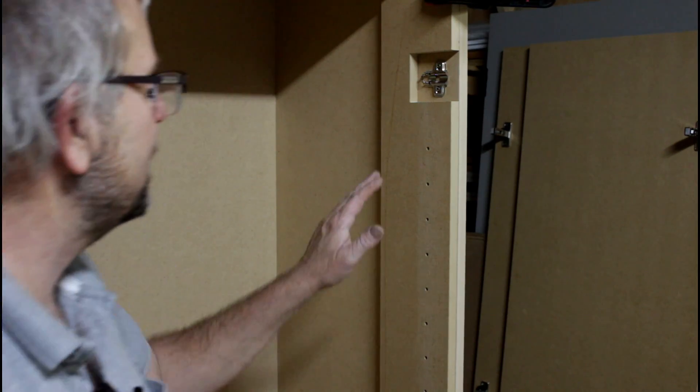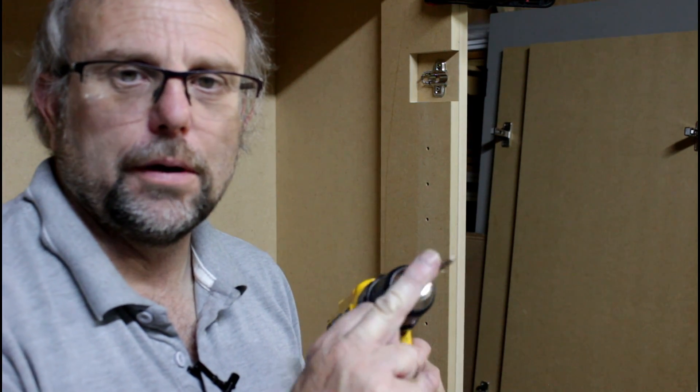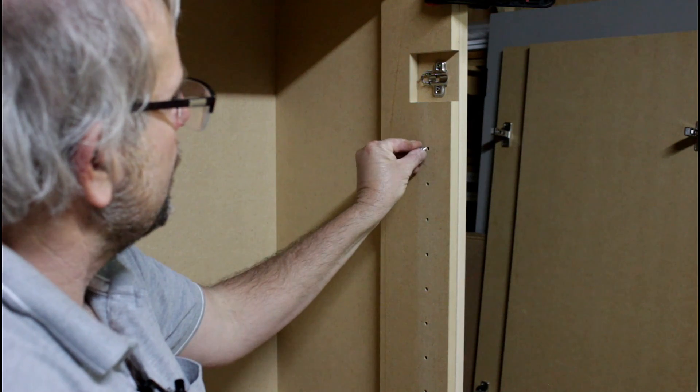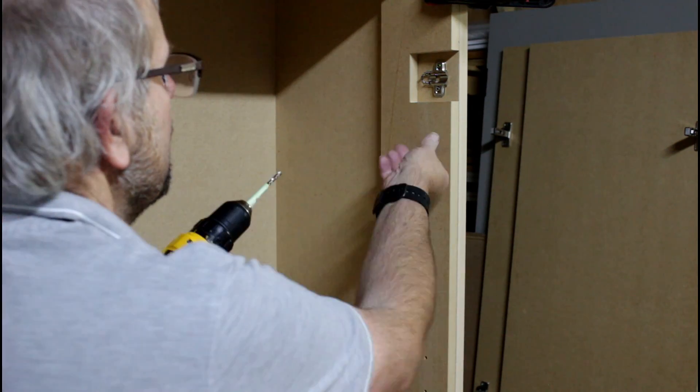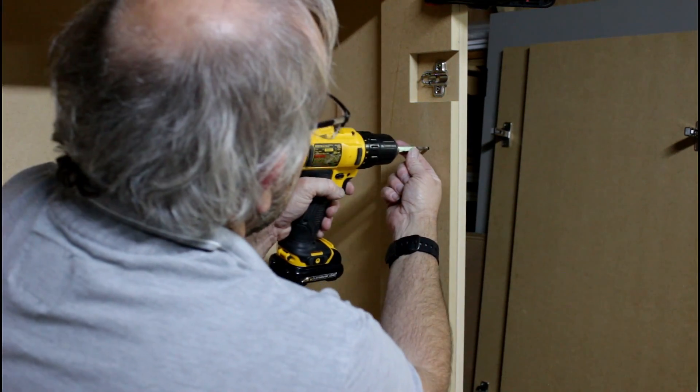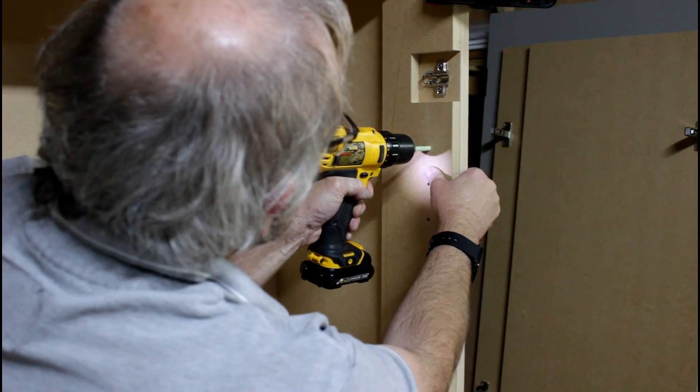So with the jig clamped in place here, I've got a five millimeter drill put into my cordless drill. That's the correct size for these pins. I've marked how deep I want to drill, and so it's just a matter of drilling each hole like so.